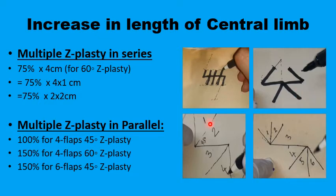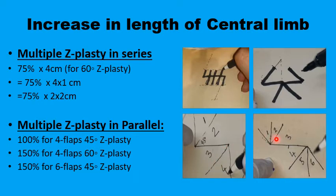For the in-parallel type, when a 100% or 150% increase in central limb length is needed, four-flap 45-degree in-parallel Z-plasties provide 100% increase, and six-flap 45-degree in-parallel Z-plasties provide a 150% increase in the length of the central limb.